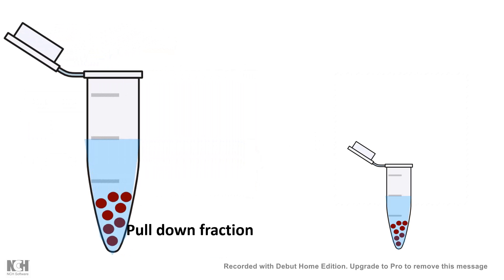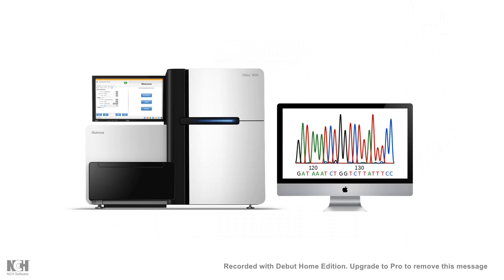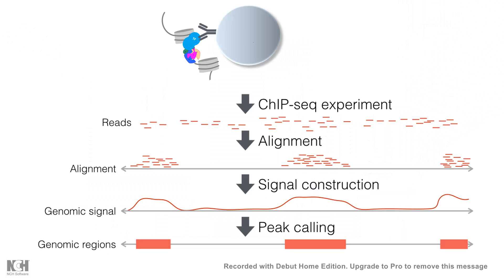That would tell us what sequences are associated with that. So the sequencing machine readout would tell us which specific sequences are enriched in that pull-down fraction. So what came along with that pull-down protein of interest, what sequences came out, and the enrichment peaks would tell us what sequences that DNA probably binds to.